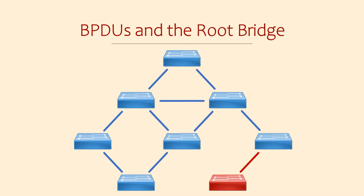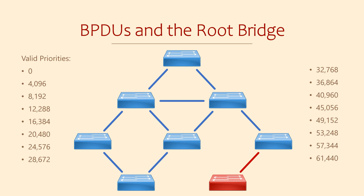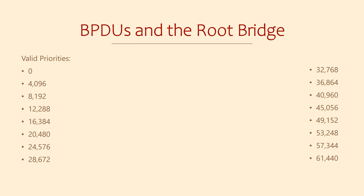The Bridge Priority is a number from 0 to 61,440. However, you can't just pick any number from this range — this value needs to be divisible by 4096. That seems like a bit of a weird requirement, but there is actually a reason for it.